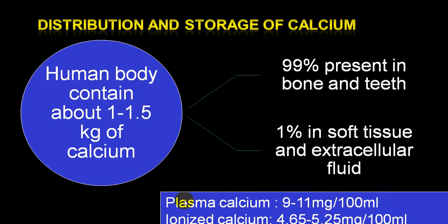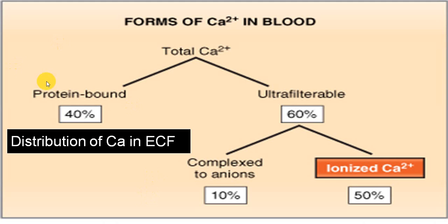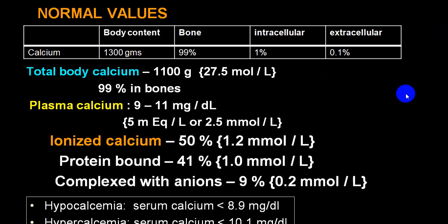50% of plasma calcium is ionized calcium. But that figure can change depending upon the protein level — the protein-bound fraction can change. In a case of hypoproteinemia, the ionized calcium will increase, but the total calcium remains the same.